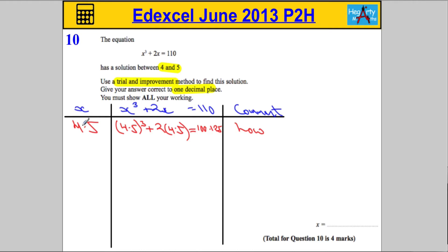So using that information I know that 4.5 is too small or too low, so let's choose something a little bit bigger. Let's go for 4.6. We're going to do the exact same thing again: 4.6³ plus two lots of 4.6.